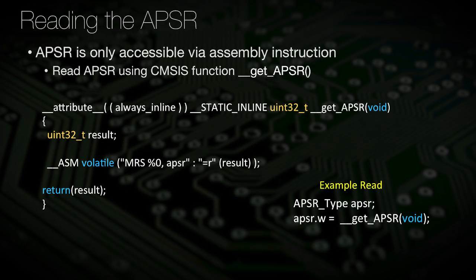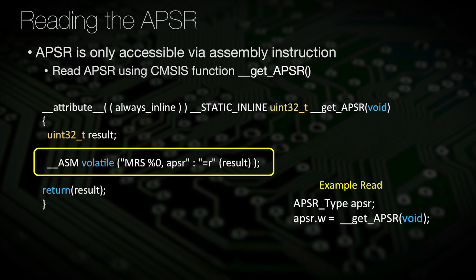The APSR is not something you would typically be writing to. You may read from it, but you would first have to read the APSR from the Core CPU register and then assign that value to an instance of the structure. Because this register does not live in the normal address map, you cannot create a structure overlay for that address. Instead, you need to use specialized inline assembly commands to read the APSR register. This uses a compiler directive called __ASM, which allows us to write assembly code within our C program. We will cover inline assembly in more detail in a later module.